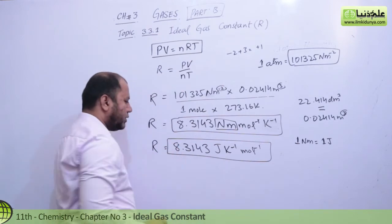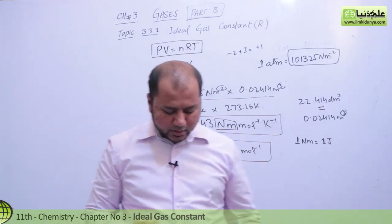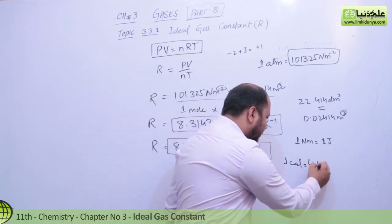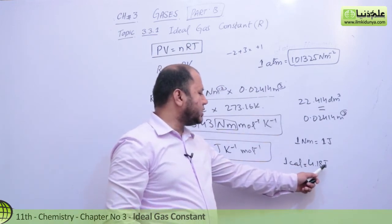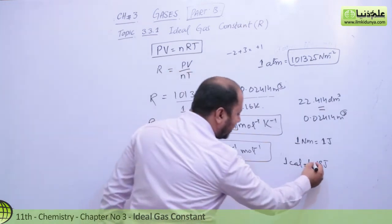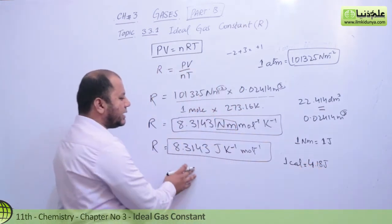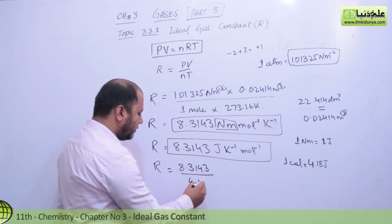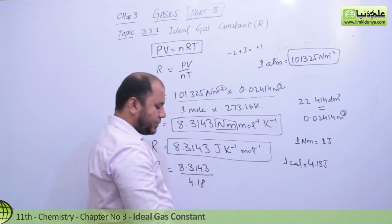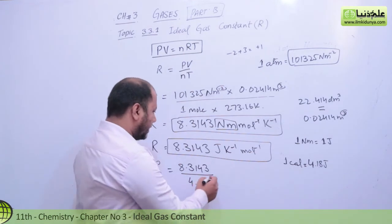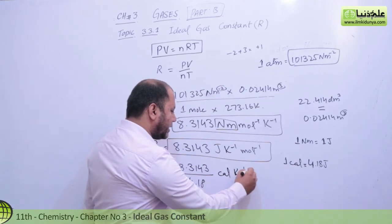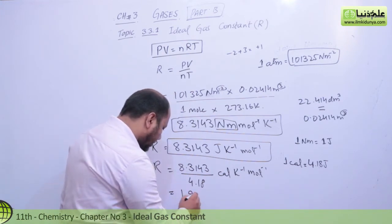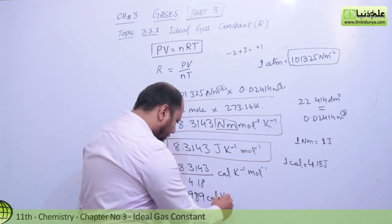Next, you can also convert R into calories. I'll tell you: 1 calorie equals 4.18 Joules. So if you want to convert Joules into calories, you take 8.3143 and divide it by 4.18. Then the value of R will convert into calories. That gives you 8.3143 divided by 4.18, which equals 1.987 calories per kelvin per mole.